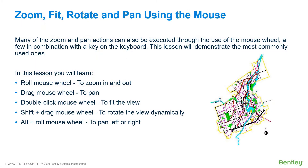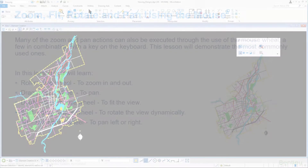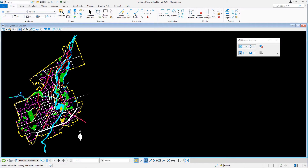Many of the zoom and pan actions can also be executed through the use of the mouse wheel, a few in combination with a key on the keyboard. This lesson will demonstrate the most commonly used ones. Continue in ViewingDesigns.dgn in the element creation model.